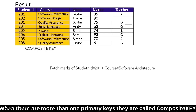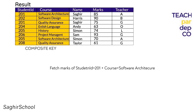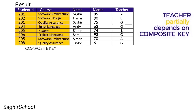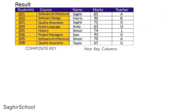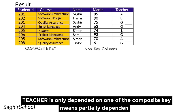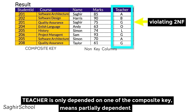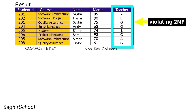In this table, Student ID and Course are key columns, while Name, Marks, and Teacher are non-key columns. Partial dependency is when a non-key column does not depend on all primary key columns. Here, Teacher only depends on Course — what course does a teacher teach — and has nothing to do with Student ID. This is a classic case of a non-key column being only partially dependent on the key columns.